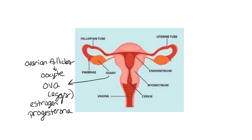The uterine tubes, which are also called the fallopian tubes — fallopian tubes and uterine tubes are the same thing. At the end of them, they have what are called fimbriae. Those fimbriae are these little finger-like ends that are actually going to be sweeping the fluid, and they're going to be what sweeps the ovulated egg into the uterine tube.